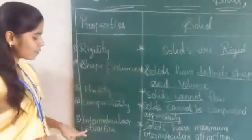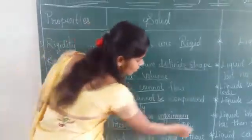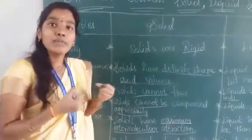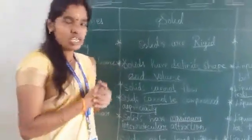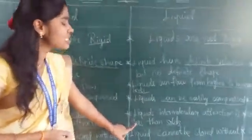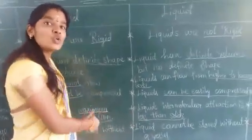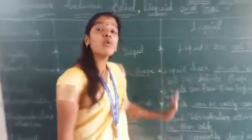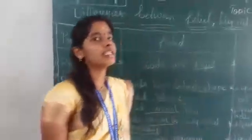The fifth property is intermolecular attraction. Solids have maximum intermolecular attraction, which is why they cannot be compressed easily. Liquids have less intermolecular attraction compared to solids. Gases have the least intermolecular attraction.